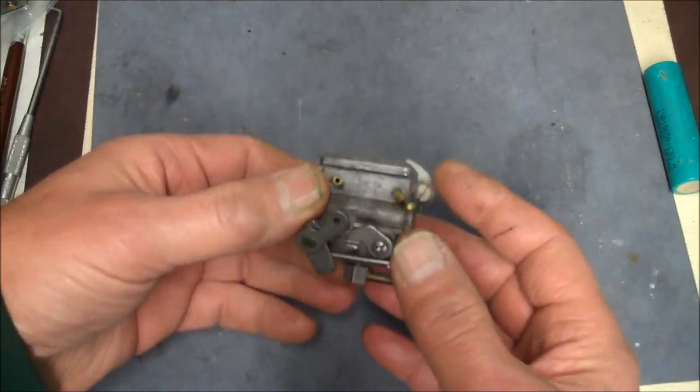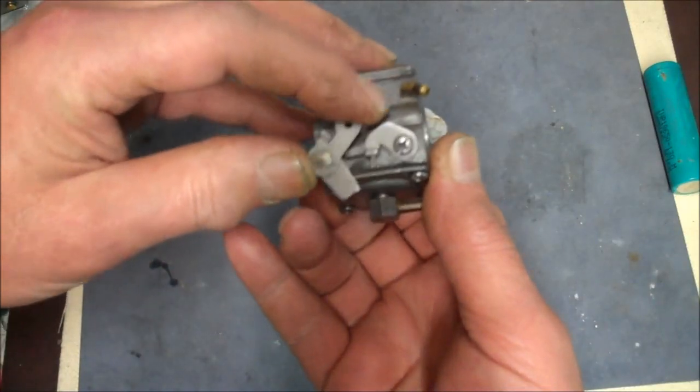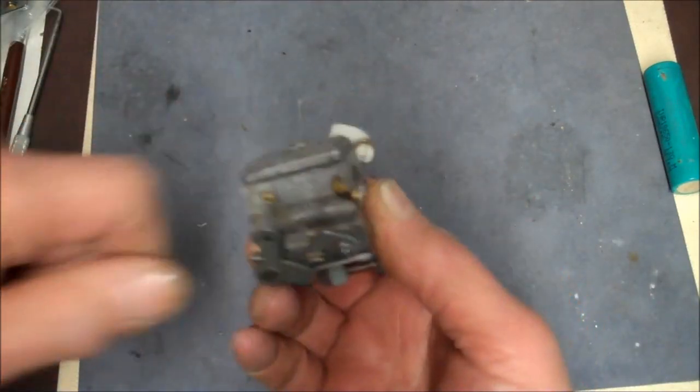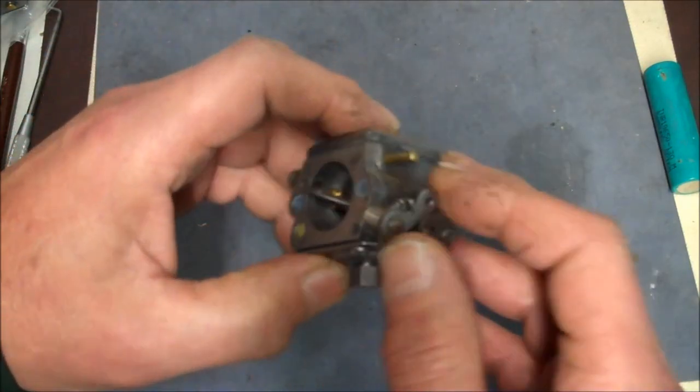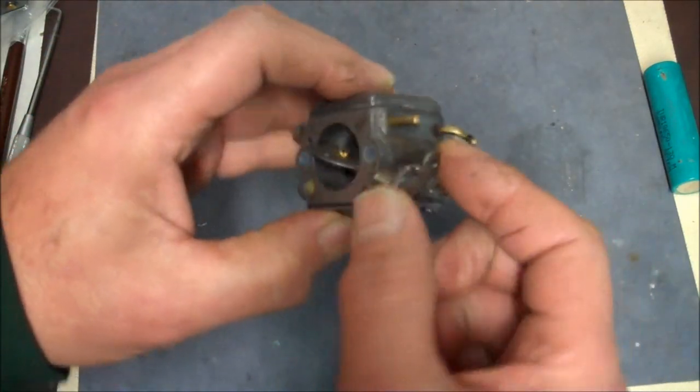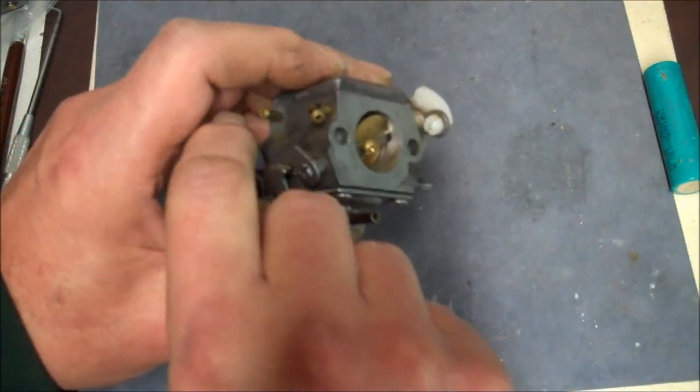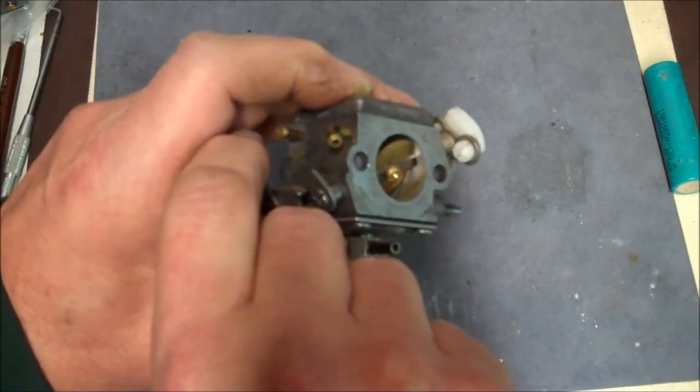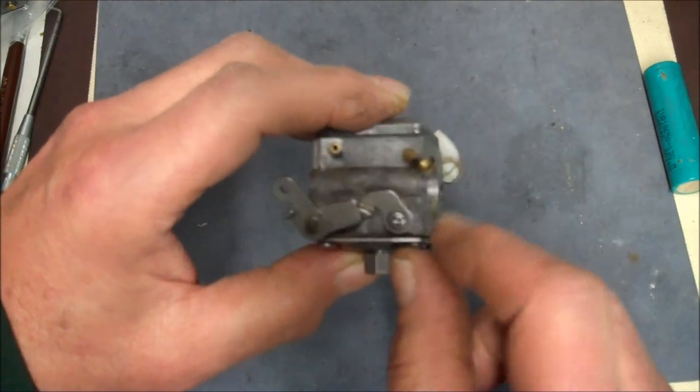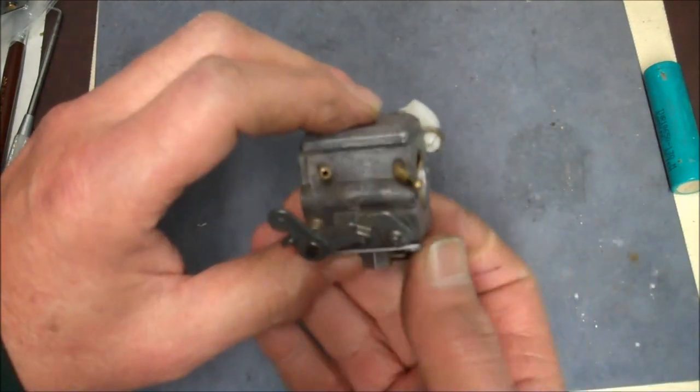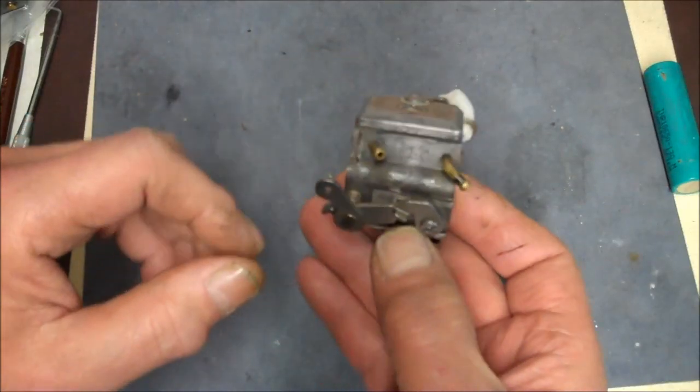So first I'm going to show you, this is the choke lever. This is the choke lever side where you pull the choke out. So I'm going to show you what happens when we pull the choke. So if you pull the choke, it closes the butterfly here. But also in the back, you can see it opens up the throttle. So when you start it, it's on a higher RPM than when it idles.